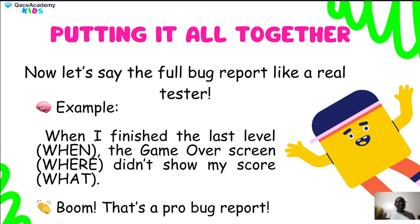Now let's put it all together like a real tester. Example: 'When I finished the last level' — that's the when. 'The game over screen' — that's the where. 'It didn't show my score' — that's the what. Boom! That's a proper bug report!